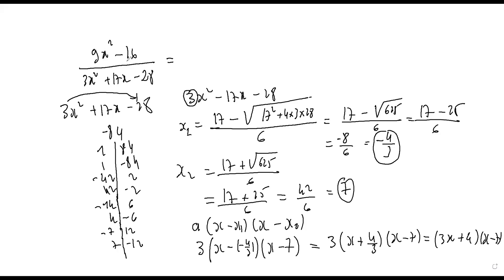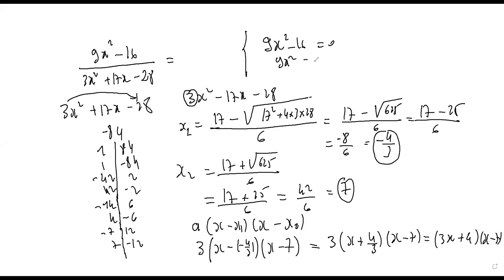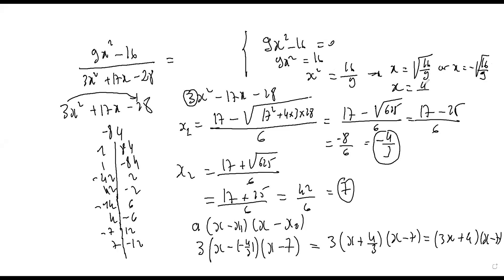For the numerator, nine x squared minus sixteen: set equal to zero, then nine x squared equals positive sixteen, x squared equals sixteen over nine, so x equals plus or minus four over three. These are the two roots of the numerator.